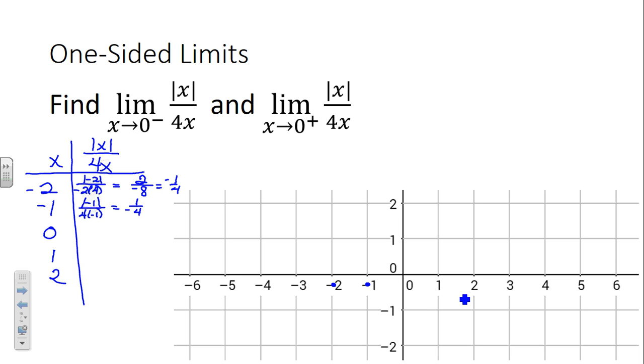And what happens at zero? Undefined. Can't divide by zero. So, asymptote or something, a whole something is going on there. Now, let's try and plug in 1. Absolute value of 1 over 4 times 1 is going to get us 1 fourth.